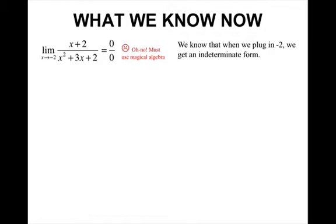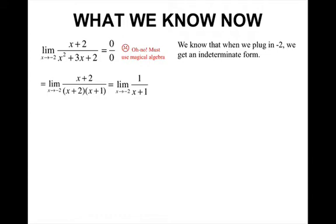What type of algebra are we going to use? You should factor the bottom so that the (x+2)'s cancel and you're left with 1 over (x+1). Now when we plug in negative 2, we would get negative 1.